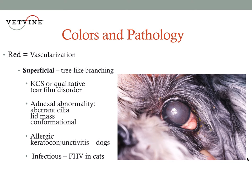We also want to take a close look and examine for any adnexal abnormality, any aberrant hairs or cilia, such as distichia or trichiasis, the presence of a lid mass or a conjunctival mass. In this case, there's a suspicious mass effect in the conjunctiva of this patient. And certainly, we want to examine for any conformational abnormalities, such as entropion or ectropion.